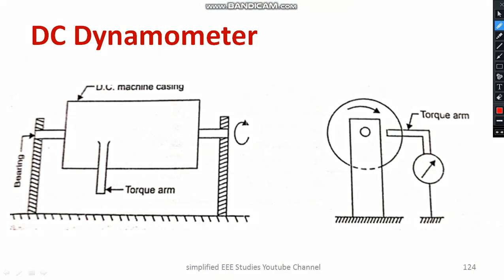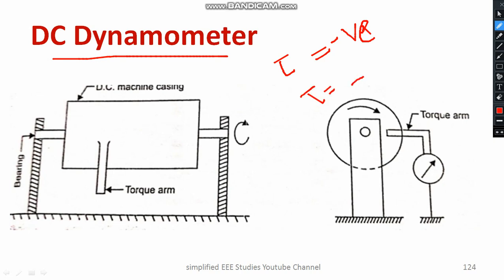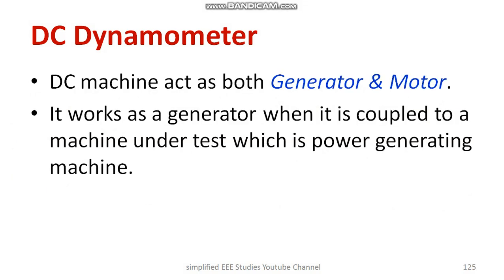Another type of arrangement for measurement of shaft power is the DC dynamometer. Regarding electrical machines, with variation in excitation, machines sometimes act as a motor and sometimes as a generator. If the DC machine acts as a generator, the torque will be negative; if it acts as a motor, the torque will be positive. Depending on the particular values of torque, you can predict the mode of operation. This type of arrangement is known as the DC dynamometer. DC machines act as both generator and motor — it works as a generator when coupled to a machine under test, which is a power-generating machine.